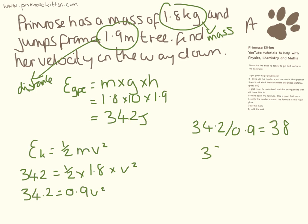So 38 equals velocity squared. And now I need to do the square root of this. So the velocity is going to be 6.2 metres per second.